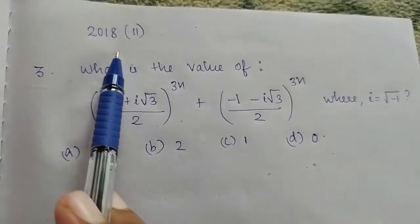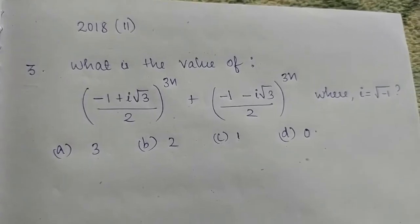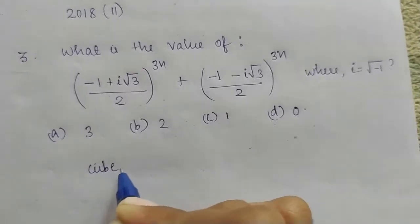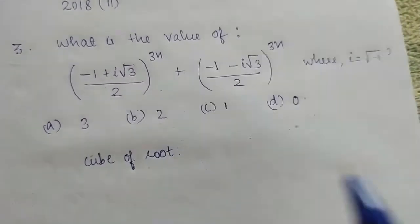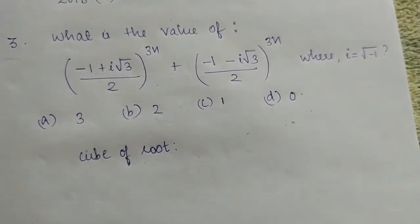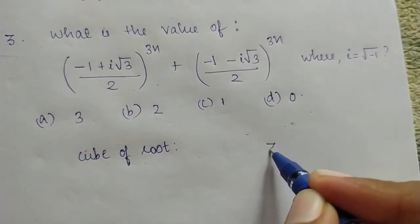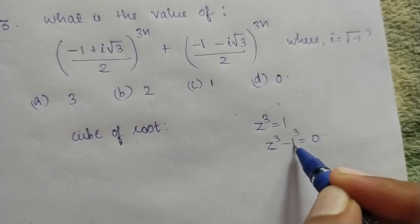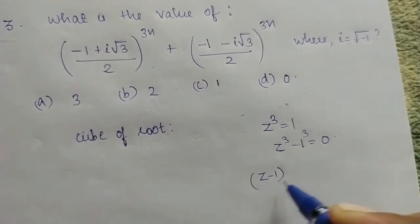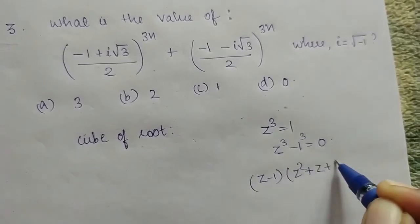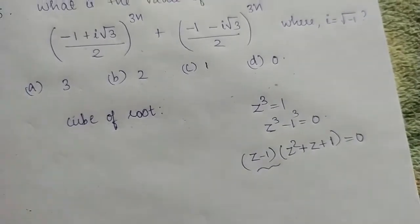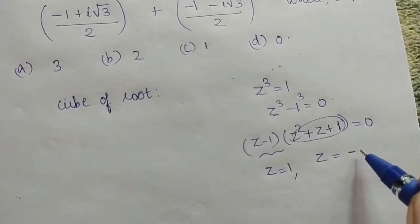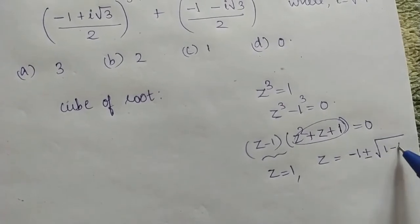Next, the third question from NDA. We add the value of the cube root of unity. Starting from z cubed equals 1, then z cubed minus 1 equals 0. Using the a cubed minus b cubed formula, we expand as z minus 1 into z squared plus z plus 1 equals 0. This is a quadratic equation solved by the formula: minus b plus or minus root of b squared minus 4ac, divided by 2a.